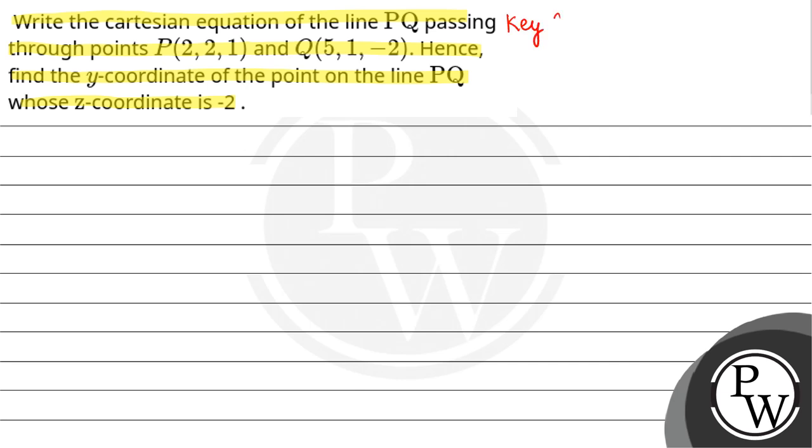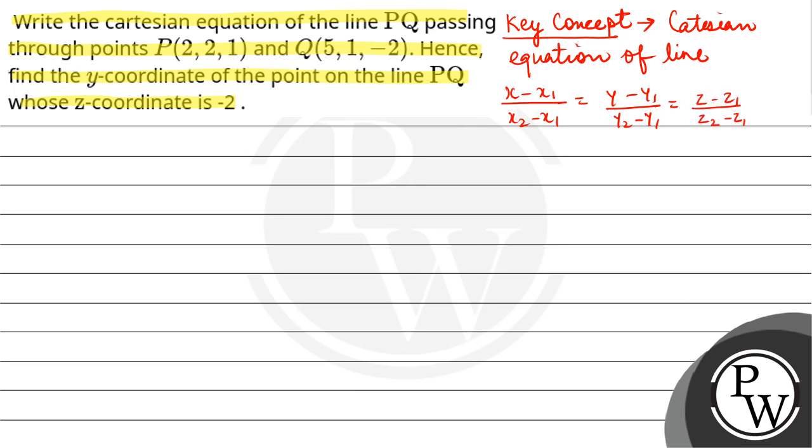So bachho, here our key concept is Cartesian equation of line. That is X minus X1 upon X2 minus X1 equals to Y minus Y1 upon Y2 minus Y1 equals to Z minus Z1 upon Z2 minus Z1.